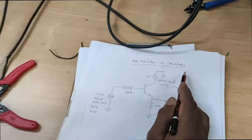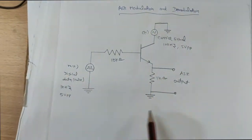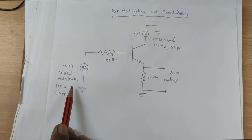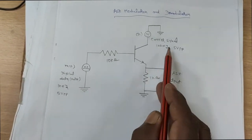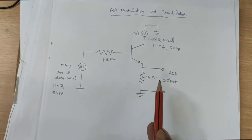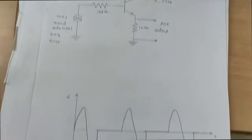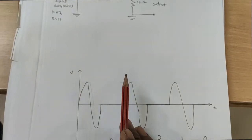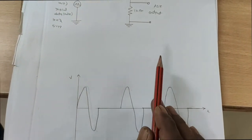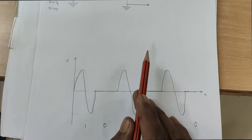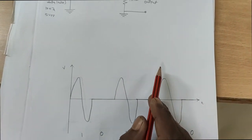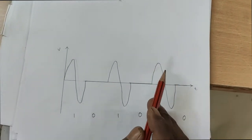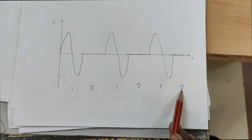This is ASK Modulation and Demodulation. This is the circuit diagram of ASK Modulation. The digital data pulse signal is given to the base terminal and the carrier signal is given to the collector terminal. Output is taken across the emitter terminal. The amplitude of the carrier signal is varied according to the digital signal — the digital signal of zeros or ones is multiplied with the amplitude of the carrier signal to generate the ASK Modulated signal.